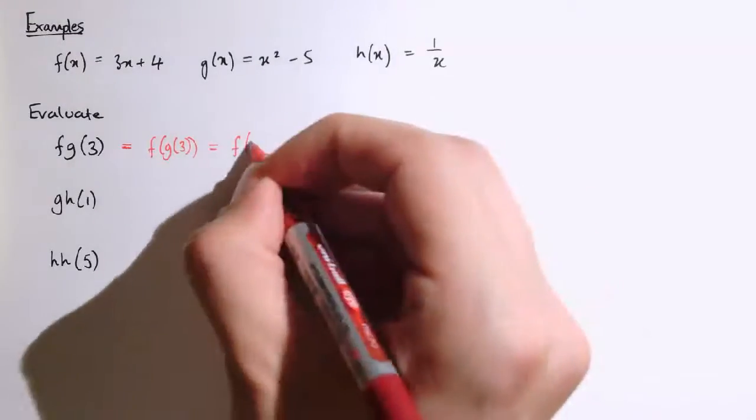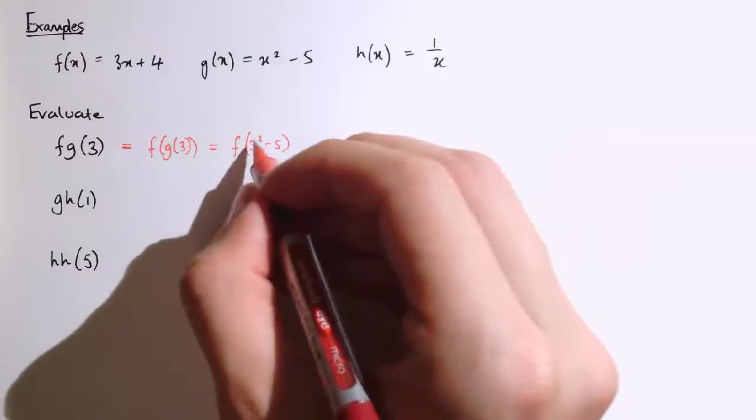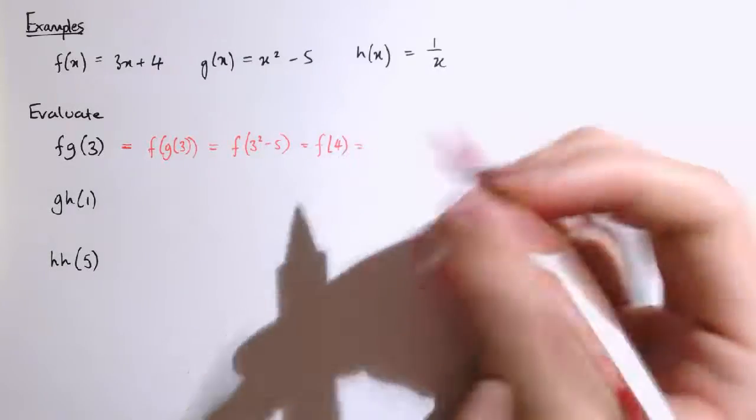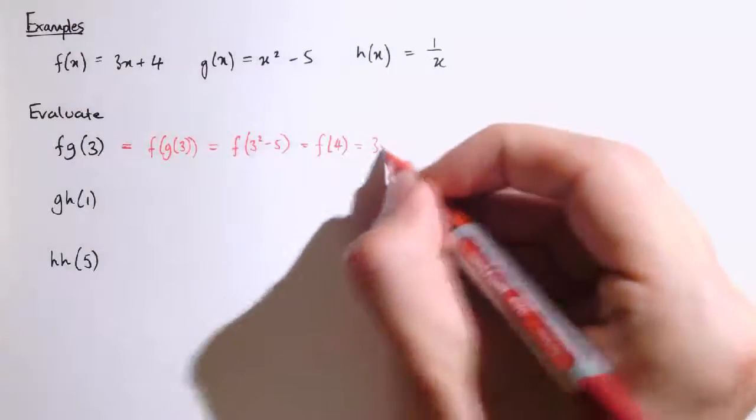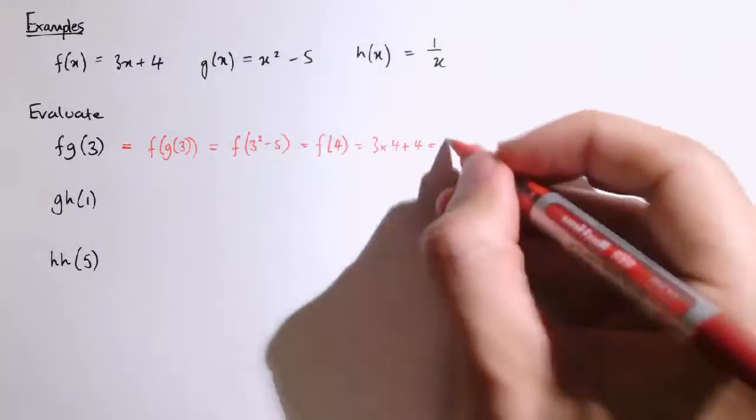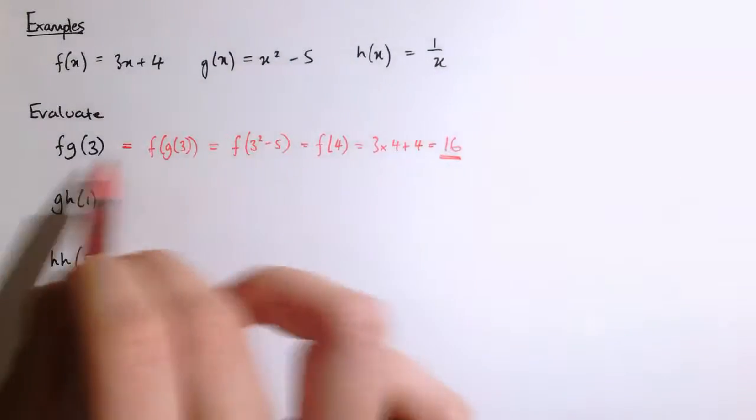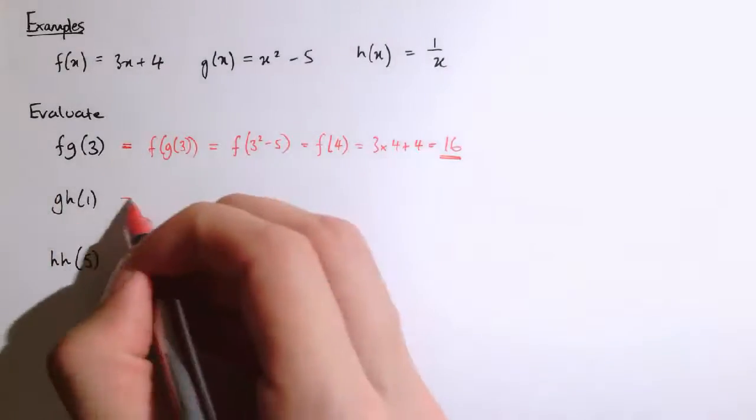So this is f of 3 squared minus 5, which is f of 9 minus 5, that's f of 4, and then putting that into f there, and we've got 3 times 4 plus 4, which is 16. So this means apply g first, and then f to whatever the input is, and see what you get. It's like applying these two machines one after the other.